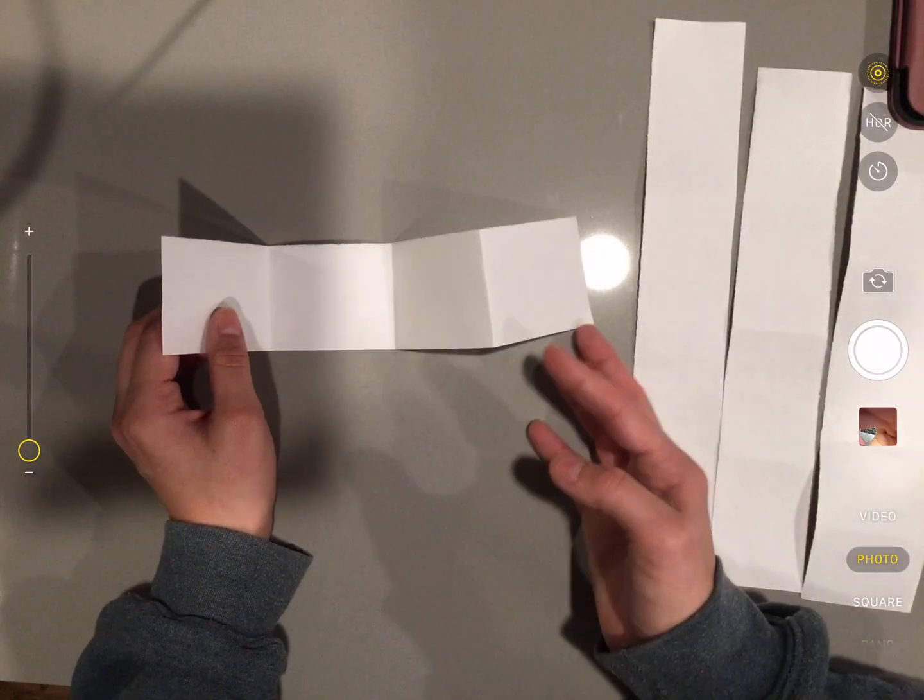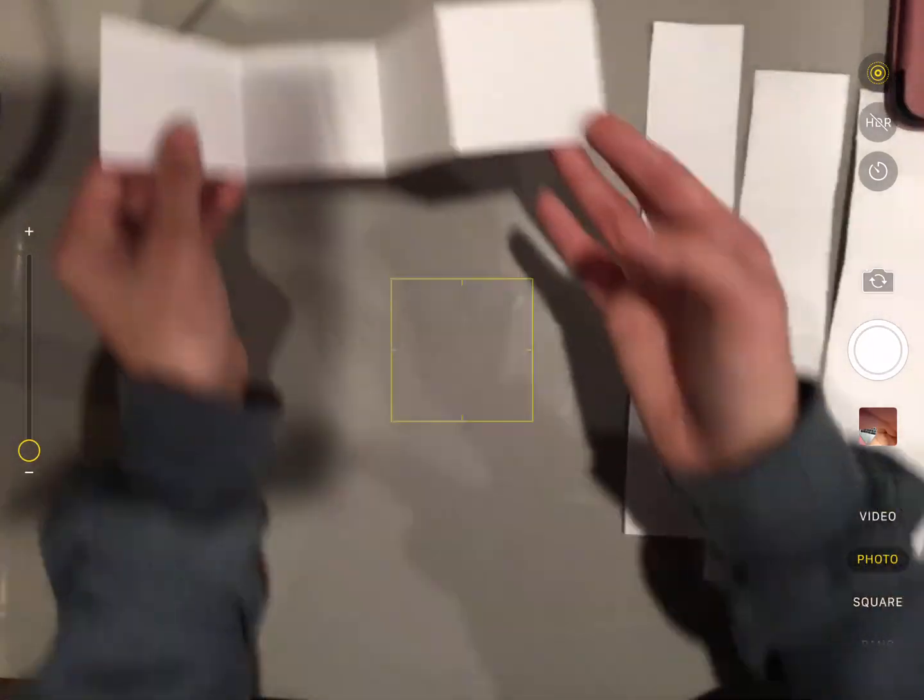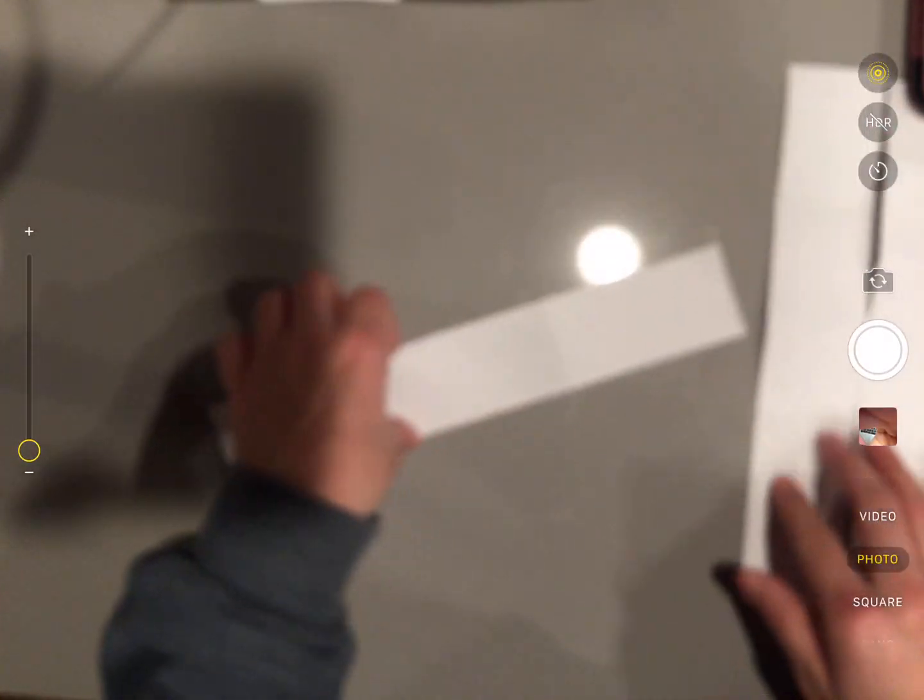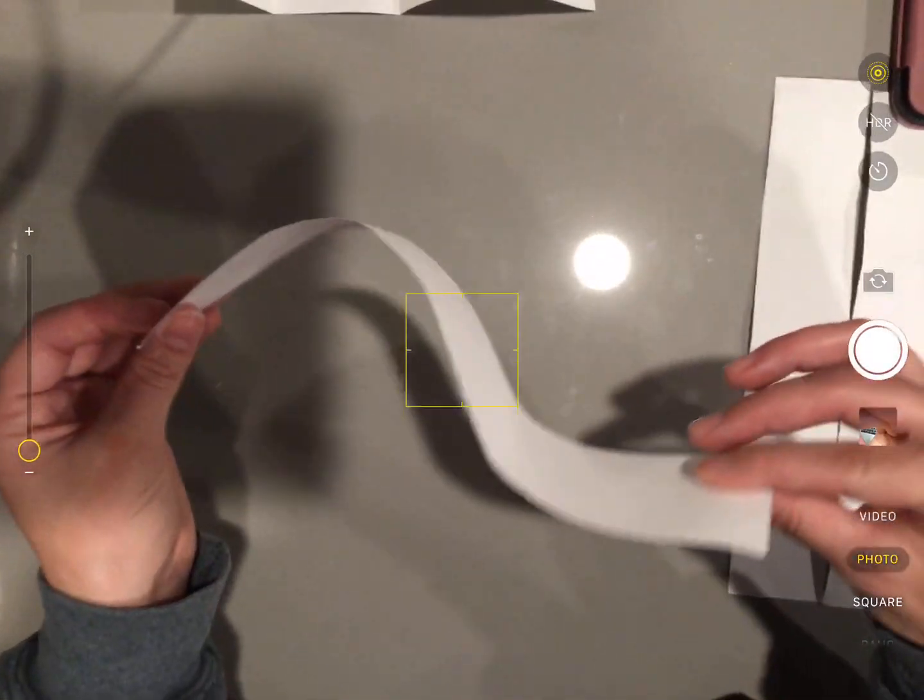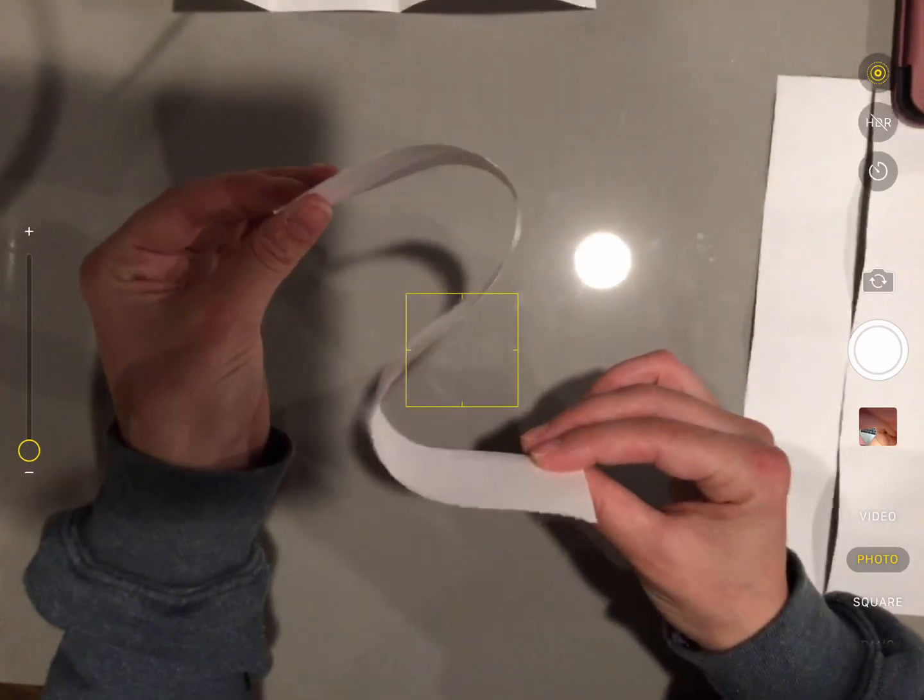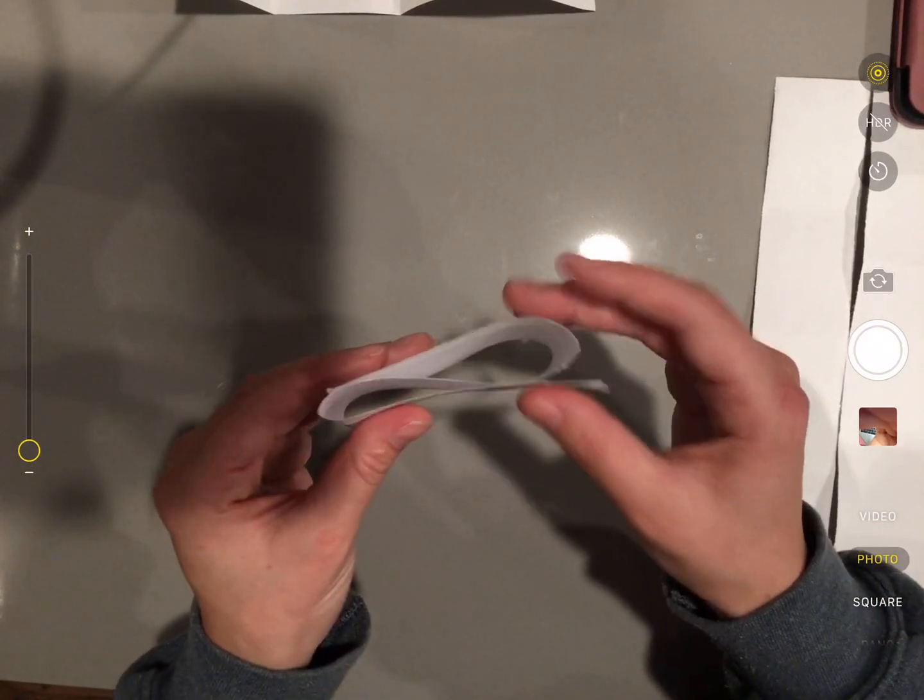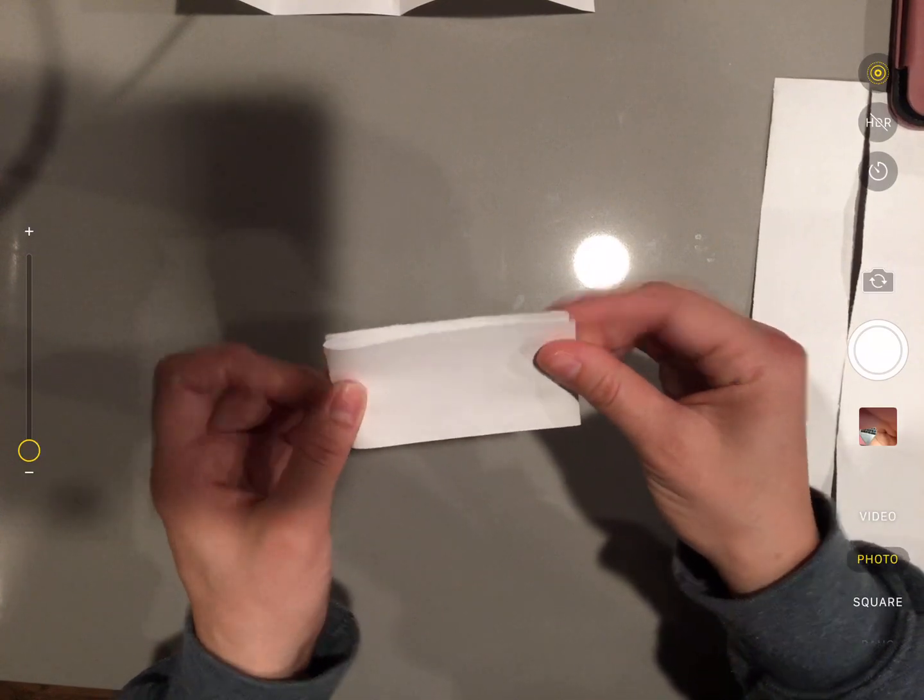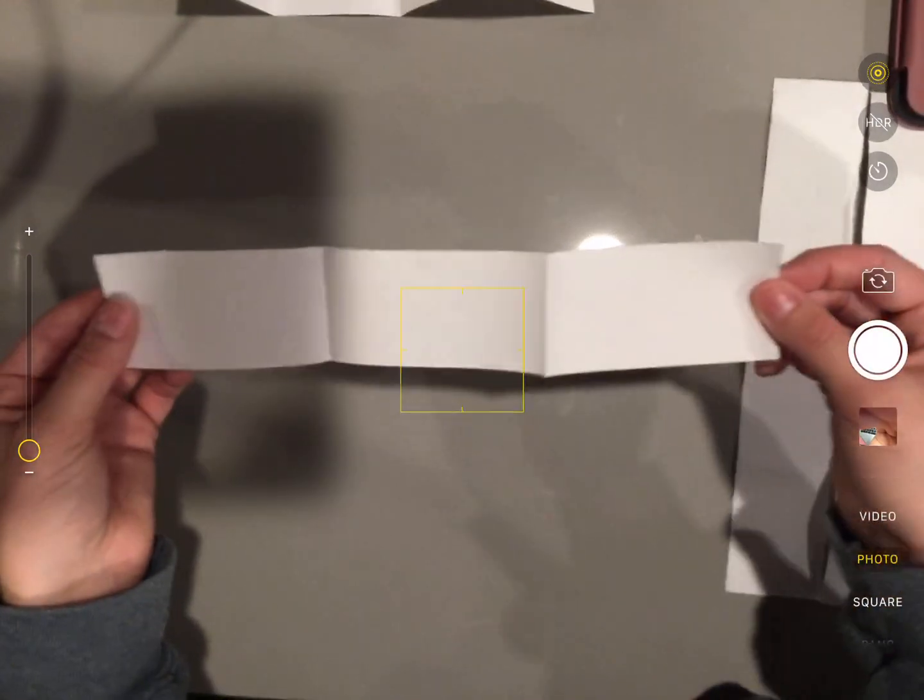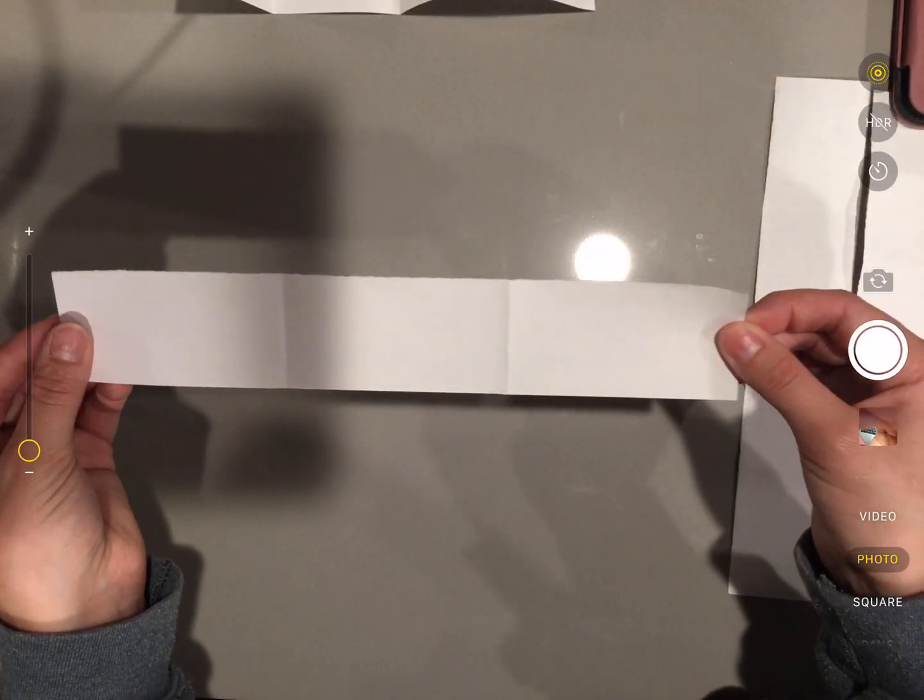All right. Now I'm going to show you how to fold a piece of paper into three equal parts. So I'm going to make my paper kind of like an S, and then I'm going to fold it just like this. Folded it. And now I have three equal parts.